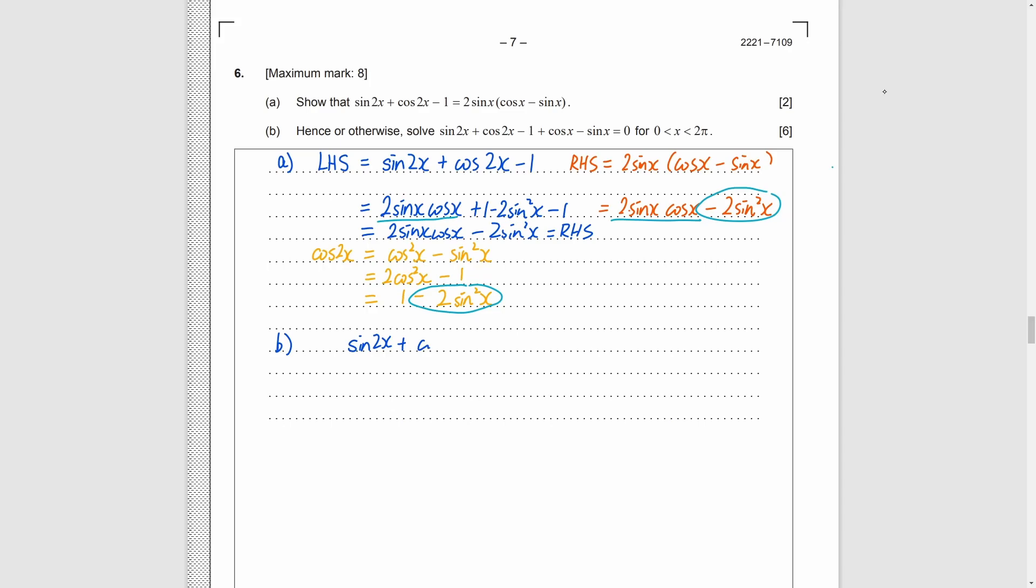Part B. Solving trigonometric equation. Obviously, we need to change the left-hand side thing by part A's identity. And after that, we need to have good observation. Cosine x minus sine x are the common factor for the front and the later parts. So, we can factorize it.